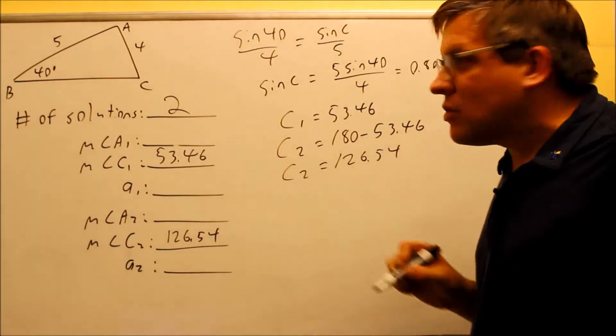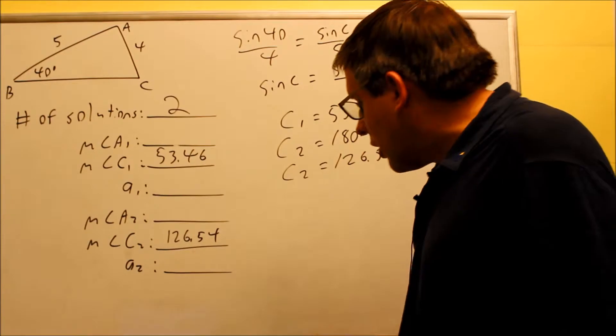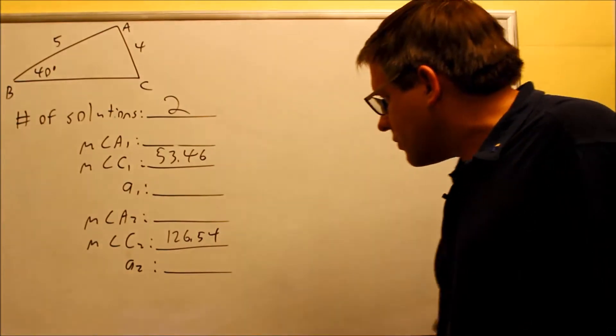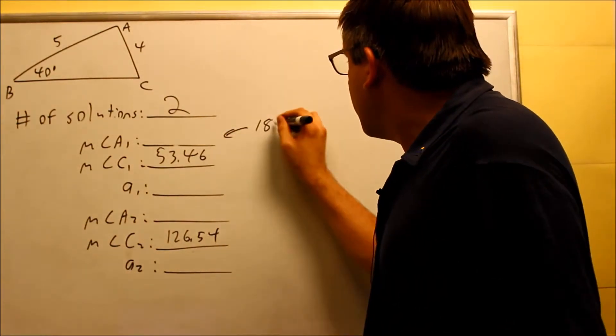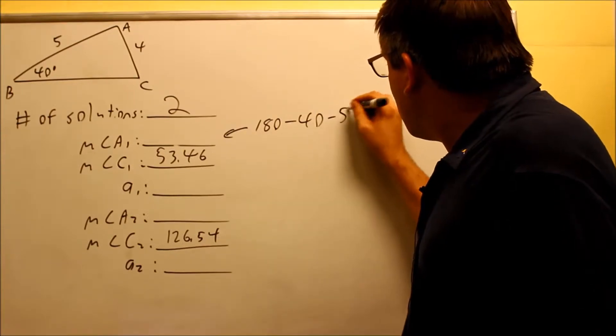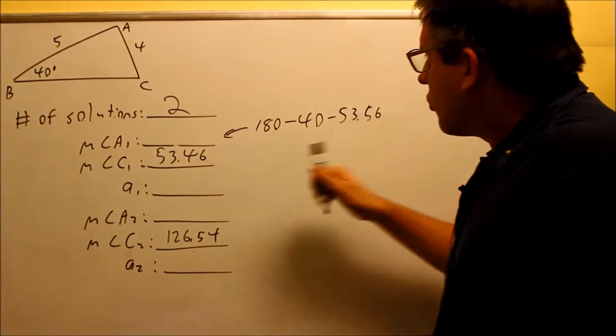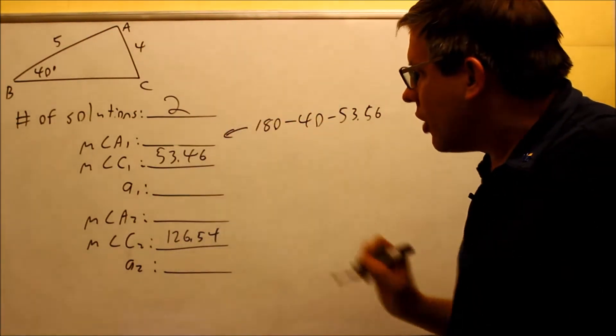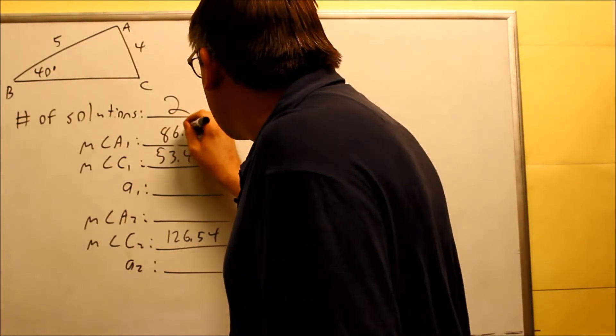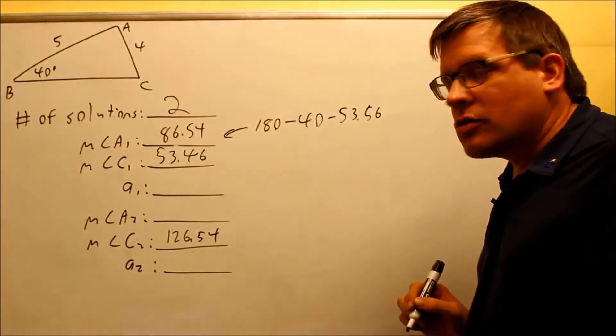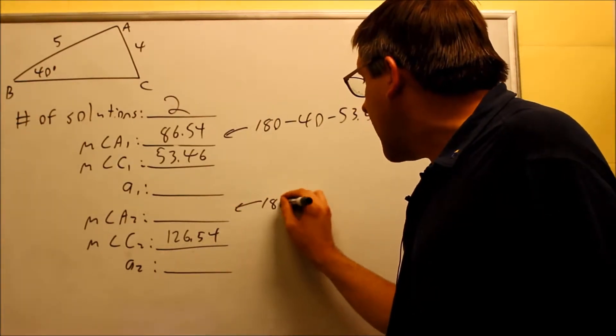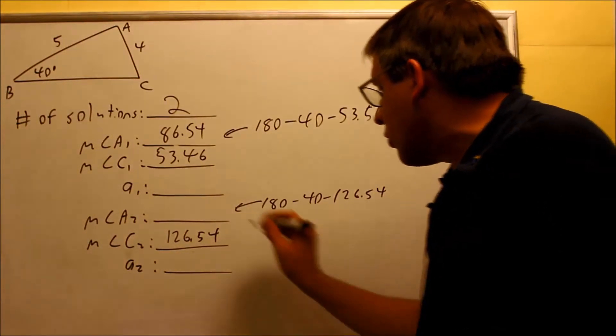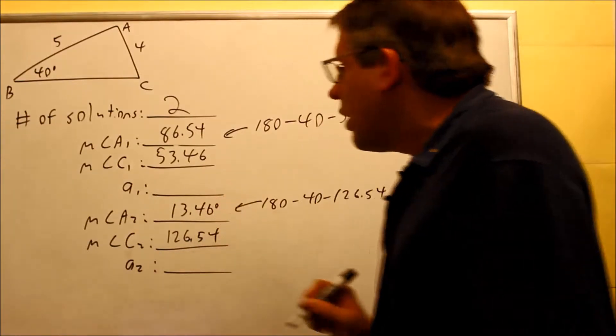Let's find A1 and A2 for each case. For this one, you're going to take 180 minus 40 minus 53.46, because if you have two out of the three angles subtract from 180 to get your A1 answer, which is 86.54 degrees. For the second triangle, you're going to do 180 minus 40 minus 126.54, and that's going to get you 13.46 degrees.